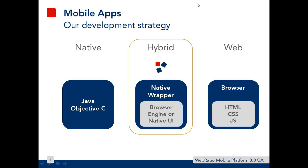Taking a look at the mobile app development strategies, there are three ways that are usually used to develop mobile apps. Starting from native ones: when you develop a native mobile application, you have to create a different application for each platform, also using a different coding language. For example, you have Java for Android, C-Sharp for Windows Phone, and Objective-C for iOS. Developing native mobile applications also means you have to spend time learning how each platform works and how to build and generate your apps.